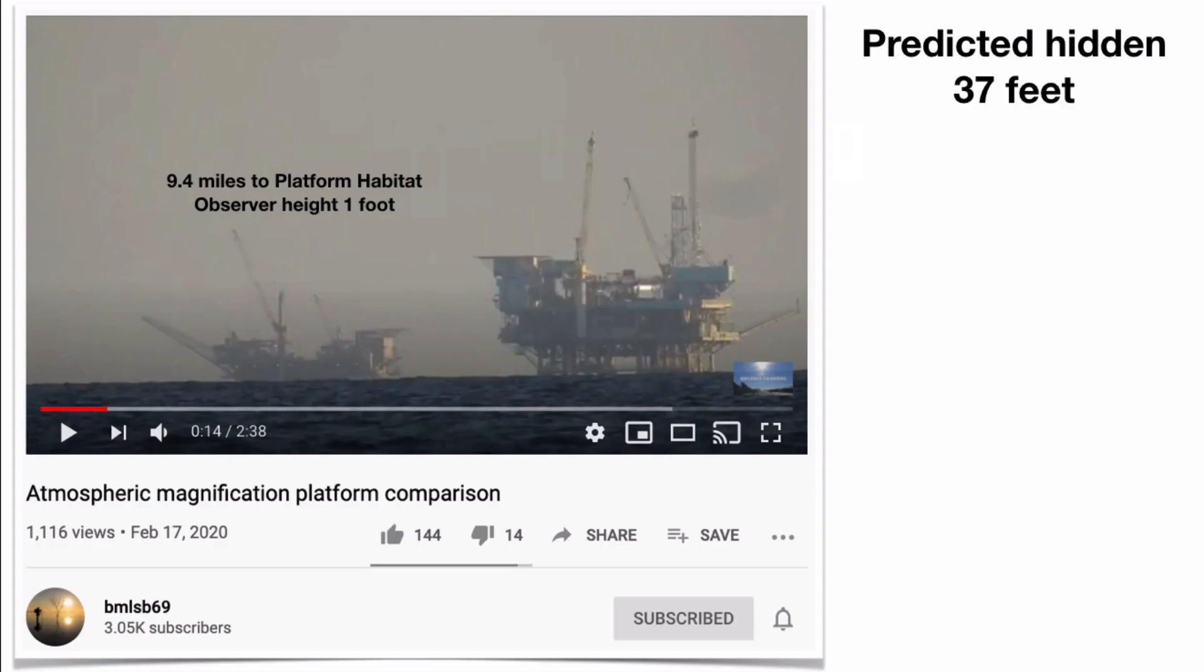And if you use the earth curve calculator, it does predict that we'd have about 37 feet of platform habitat would be obstructed. And if we take a look at the actual image, using the dimensions of the oil platform, we find that it's actually about 30 feet is obstructed in this image.